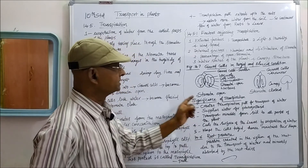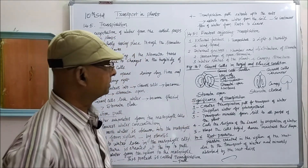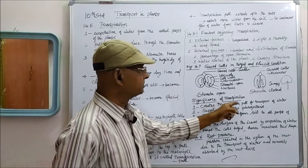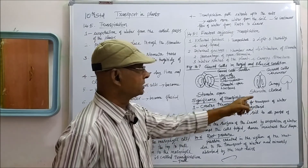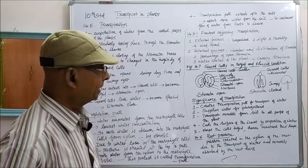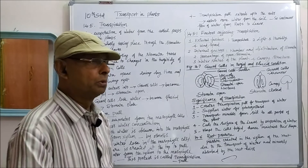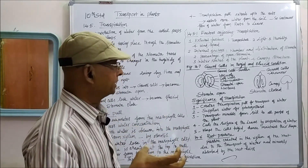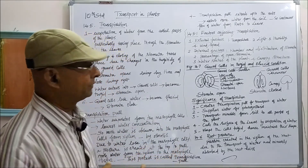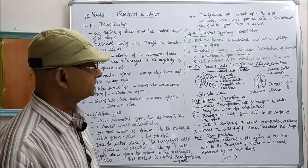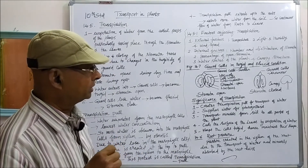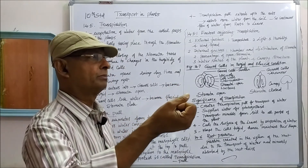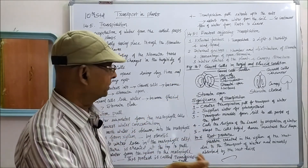The significance of transpiration: first, transpiration creates transpiration pull for the transport of water. Due to continuous transpiration, a pull is created in the mesophyll tissue of the leaf — that is called transpiration pull — which uplifts water from the stem and roots of the plant.